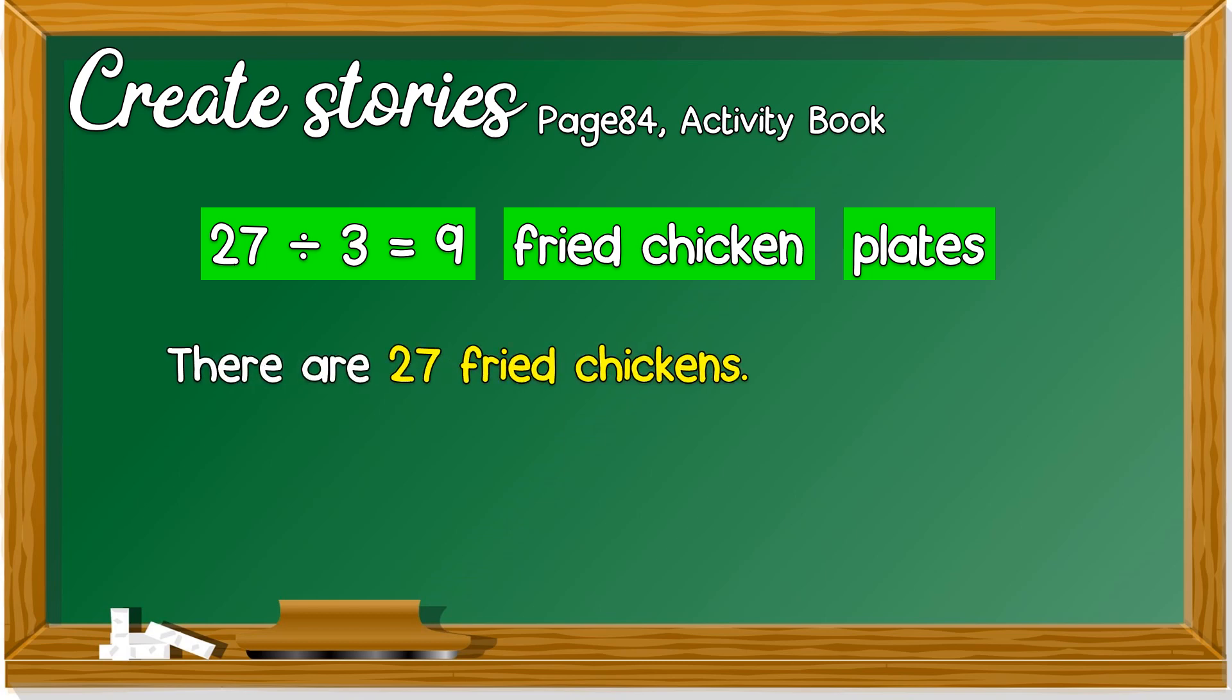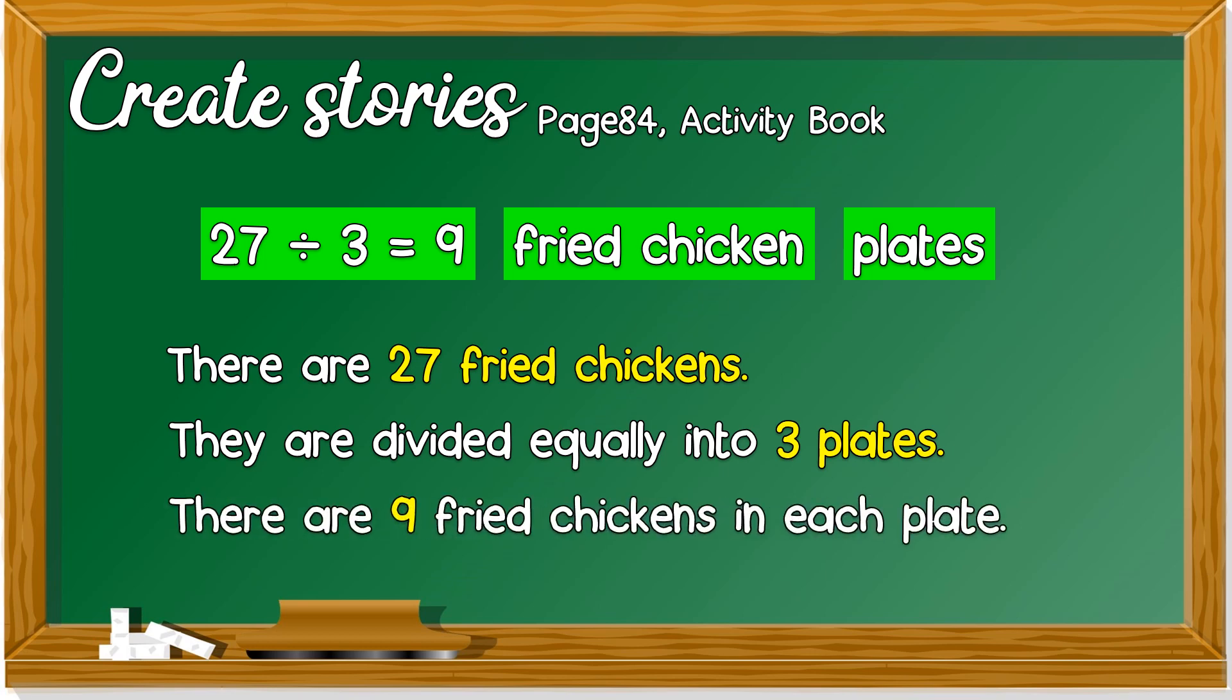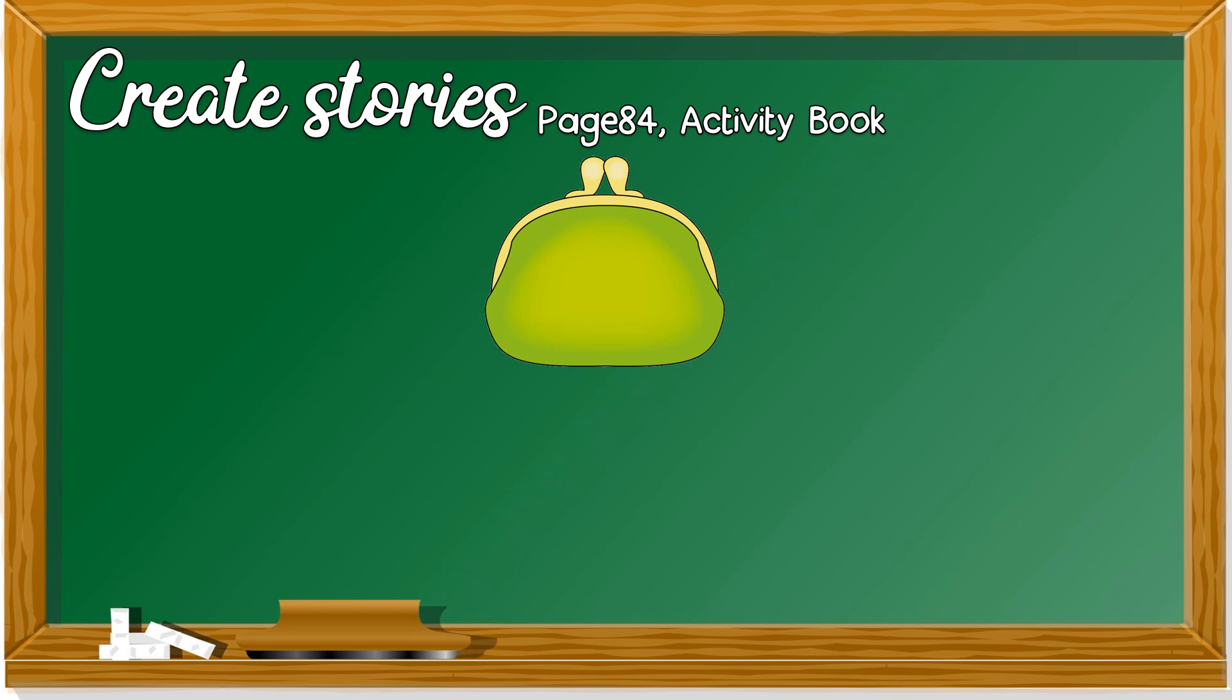You can write it like this: There are 27 fried chickens. They are divided equally into three plates. There are nine fried chicken in each plate. So, 27 ayam goreng, tiga pinggan dibahagi sama rata. Satu pinggan ada sembilan.